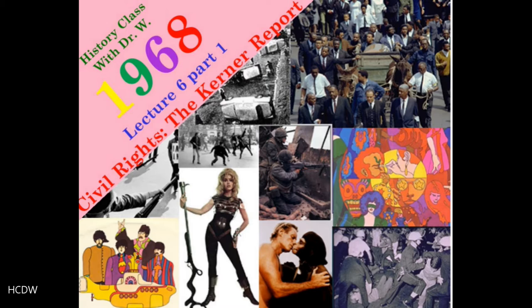We'll begin by looking at two events early in the year: the Kerner Commission Report and the Orangeburg Massacre, and then we'll move through one of the most tragic and signature events of the entire year, the assassination of Martin Luther King.